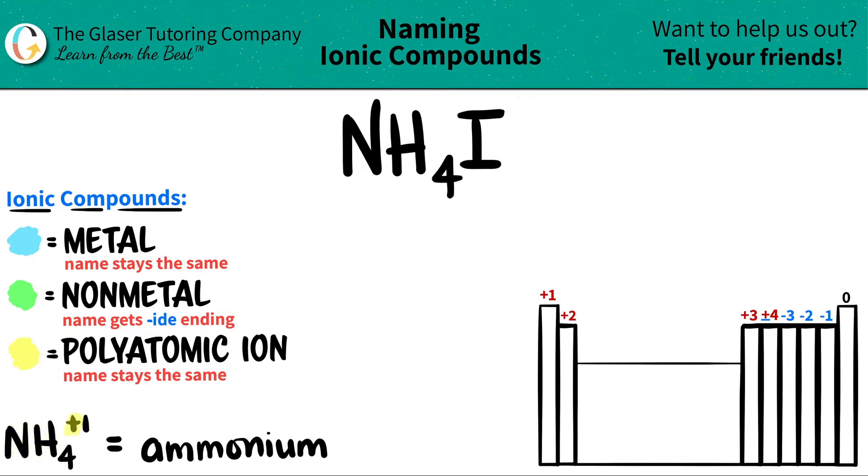NH4, which is always a plus one charge, is always called ammonium. And it's right here. Here's the NH4. So that's my polyatomic.